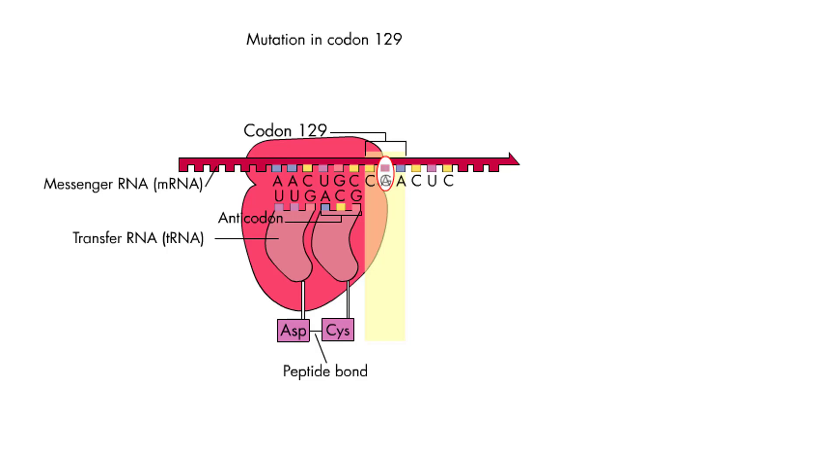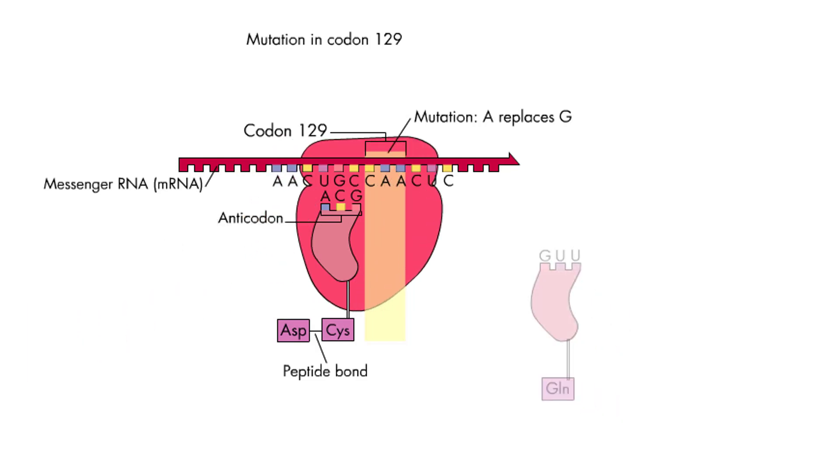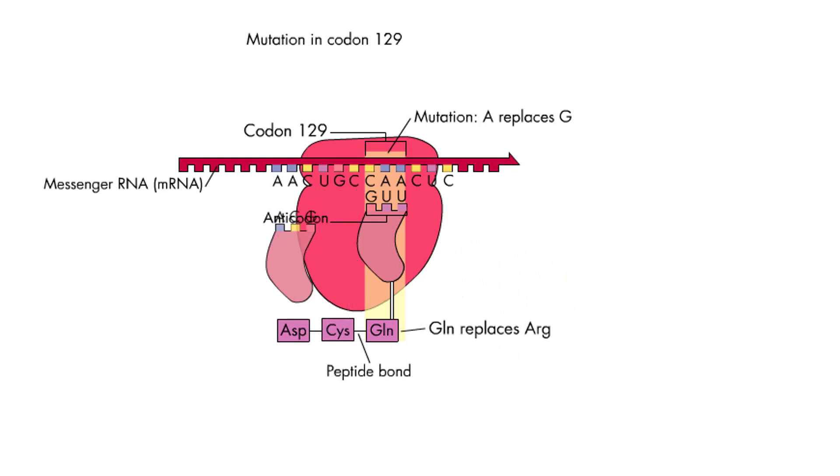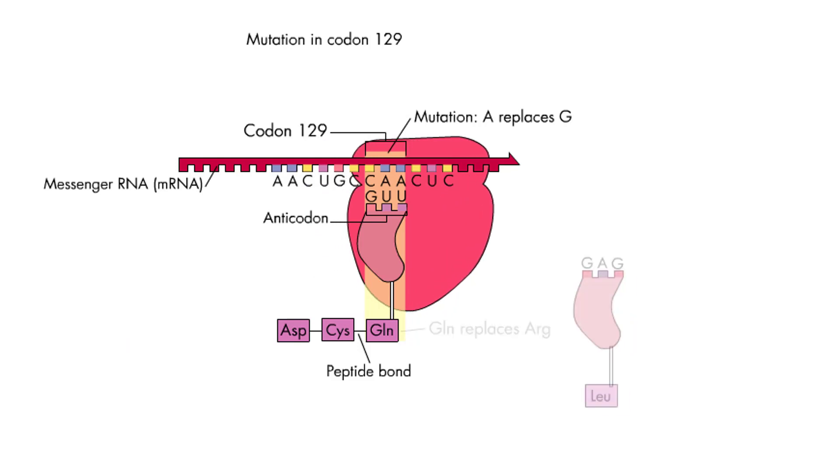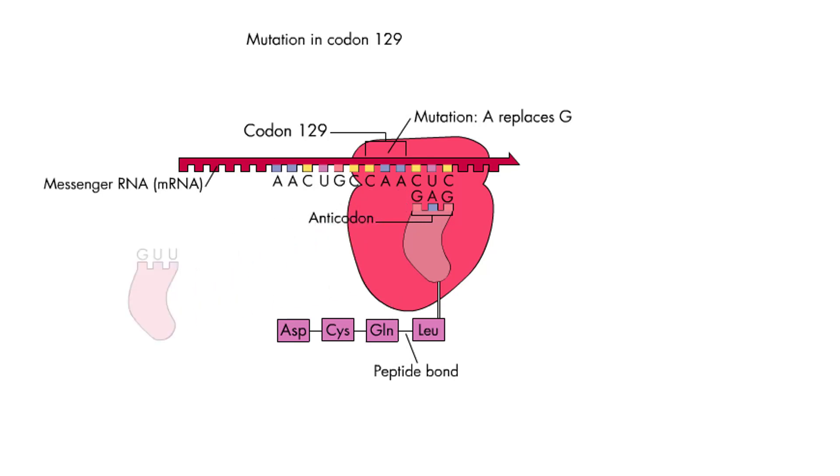Here, A was substituted for a G in codon 129 of the AT3 gene. The normal 129th codon, CGA, encodes arginine. In families with a substitution converting this codon to CAA, the amino acid glutamine is placed in this position instead. The amino acid alteration changes the shape of the AT3 protein so that it doesn't work as well in preventing clots. People with this mutation are prone to dangerous blood clots in their blood vessels.